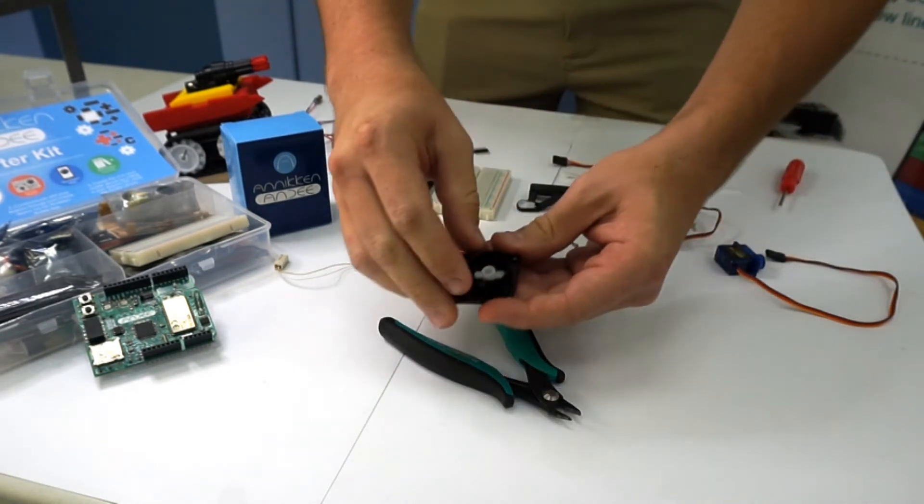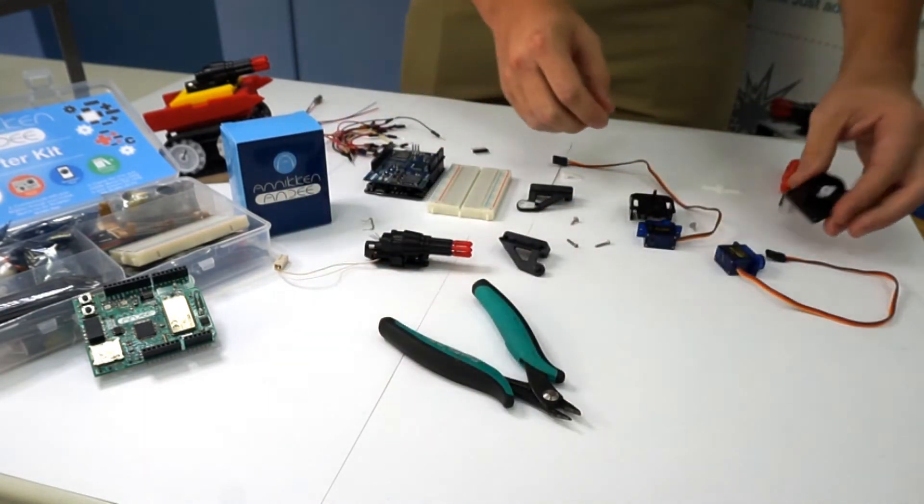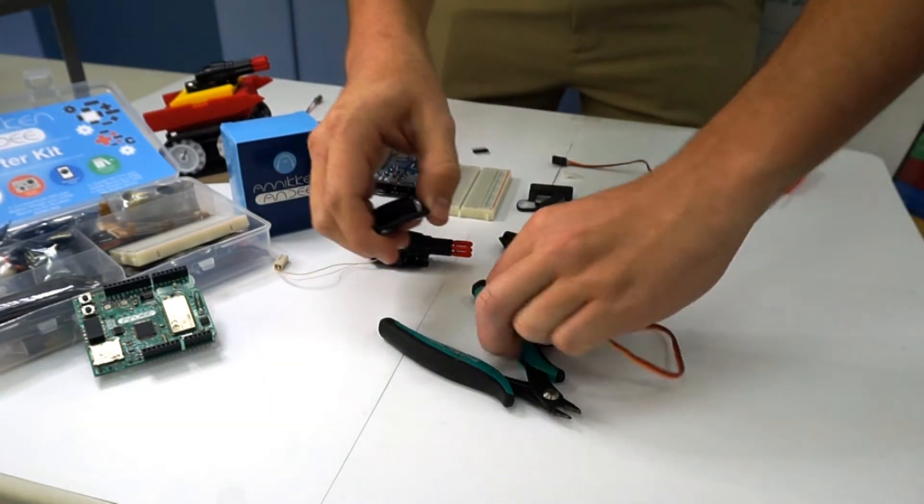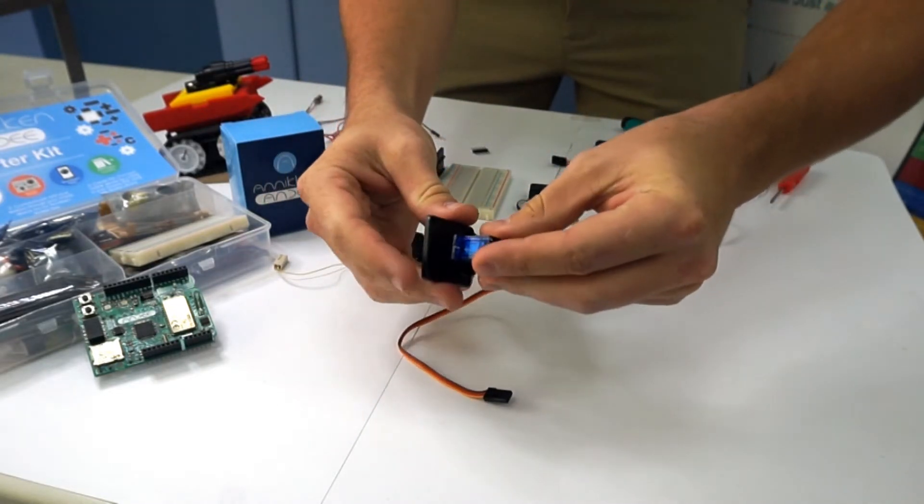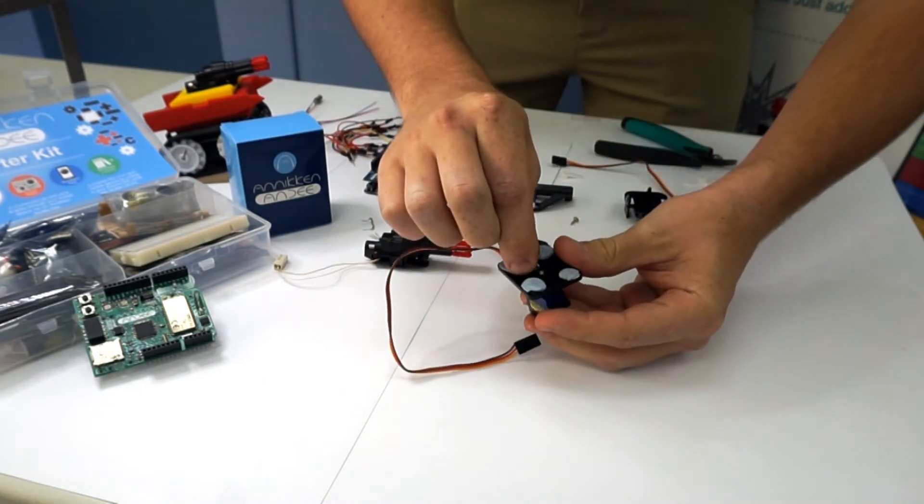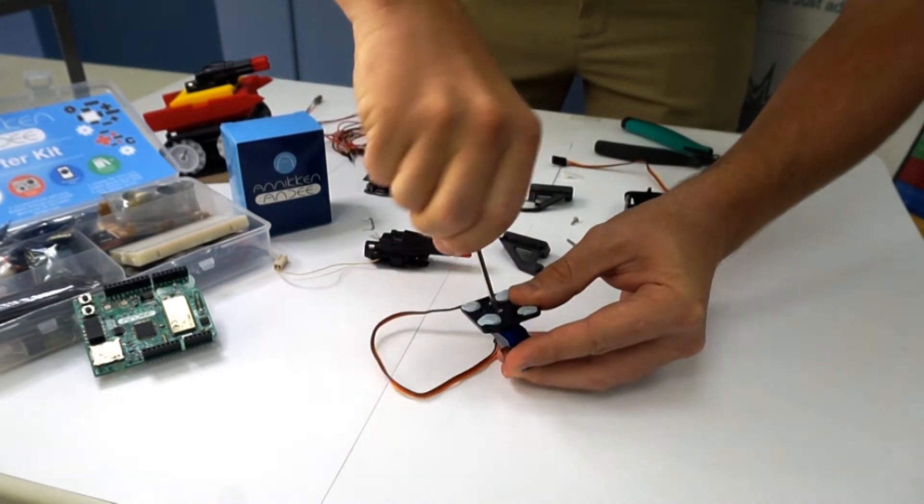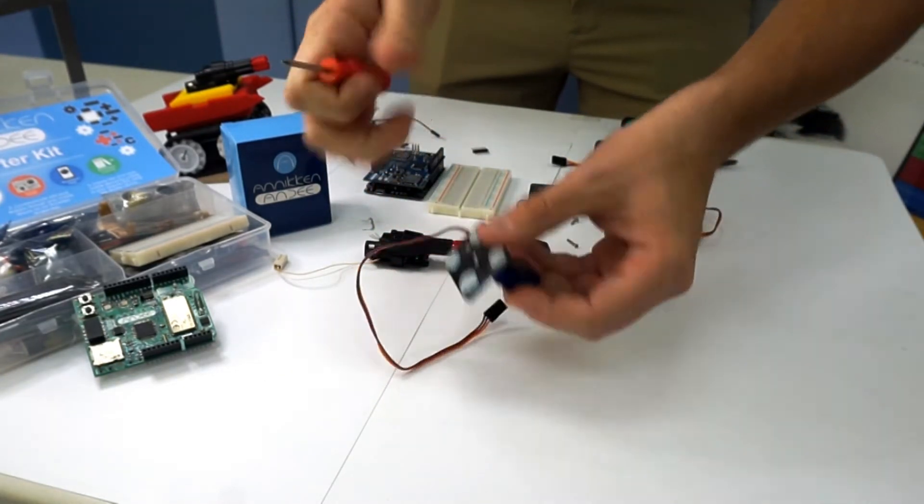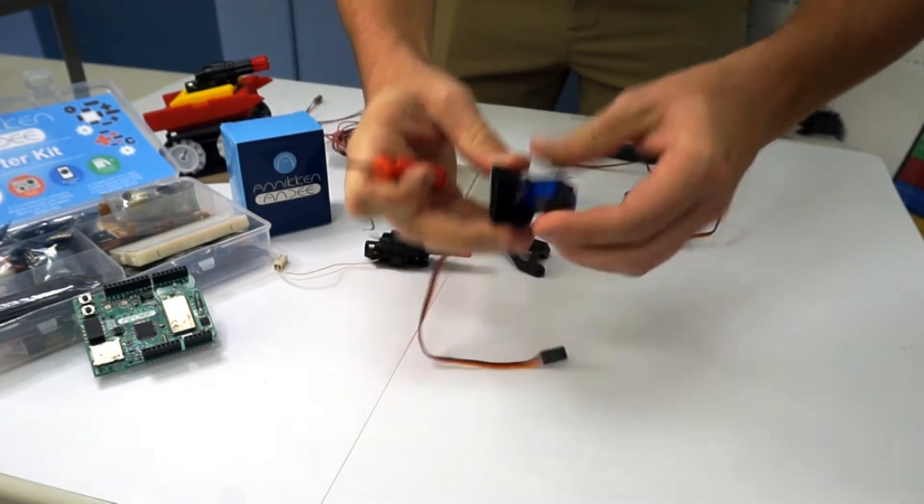Then what you're going to do is simply attach it into the base like this and then screw it. After that, what you want to do is attach the silver motor. So you simply place it on there and then you have to screw it in. Now that that's completed, it should be firm and you should be able to turn it back and forth.